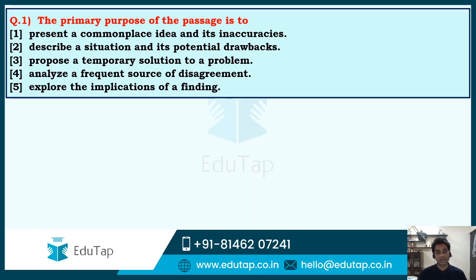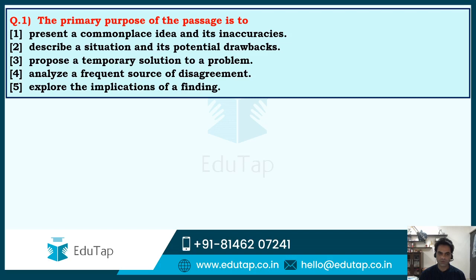Now that we've read and understood the passage, let's try to solve the questions. Question 1: The primary purpose of the passage is to — (A) present a commonplace idea and its inaccuracies, (B) describe a situation and its potential drawbacks, (C) propose a temporary solution to a problem, (D) analyze a frequent source of disagreement, or (E) explore the implications of a finding.